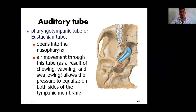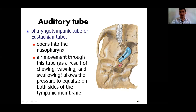The auditory tube, also known as the pharyngotympanic tube or Eustachian tube, opens from the middle ear into the nasopharynx. Air movement through this tube allows pressure to equalize on both sides of the tympanic membrane during chewing, yawning, or swallowing. In this diagram we see the cartilaginous part of the auditory tube extended from the middle ear. Superiorly we can see the foramen spinosum and foramen ovale; inferiorly from this groove we can see the carotid canal and the position of the carotid artery.